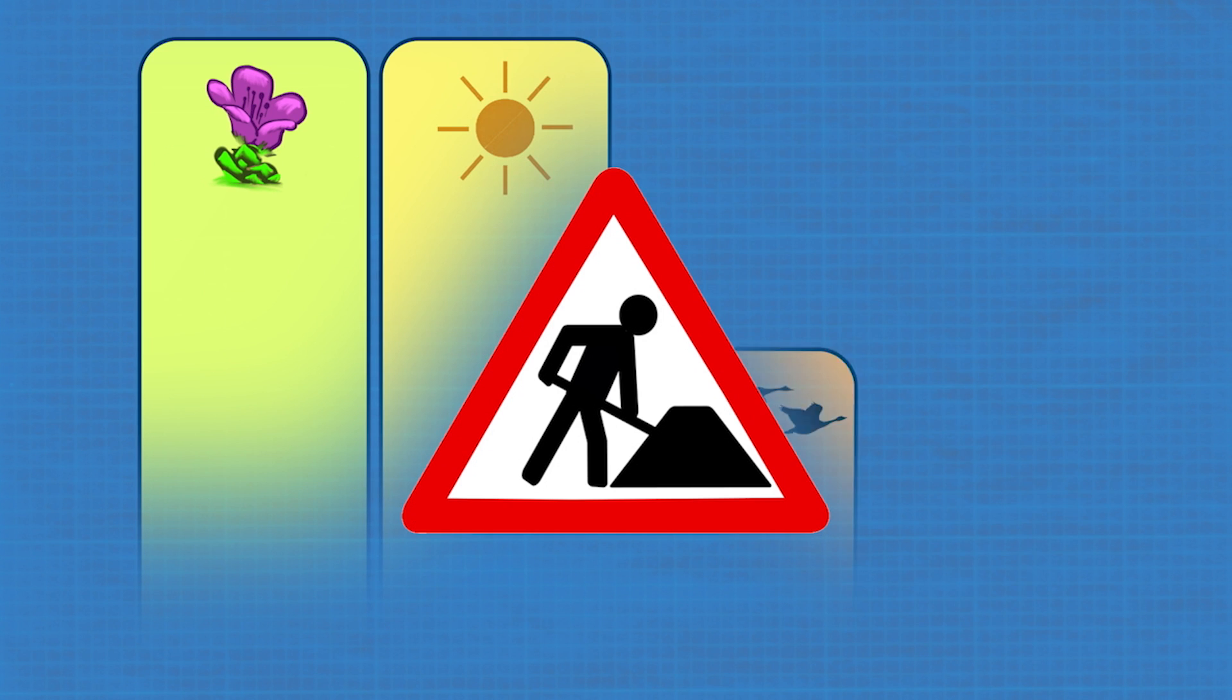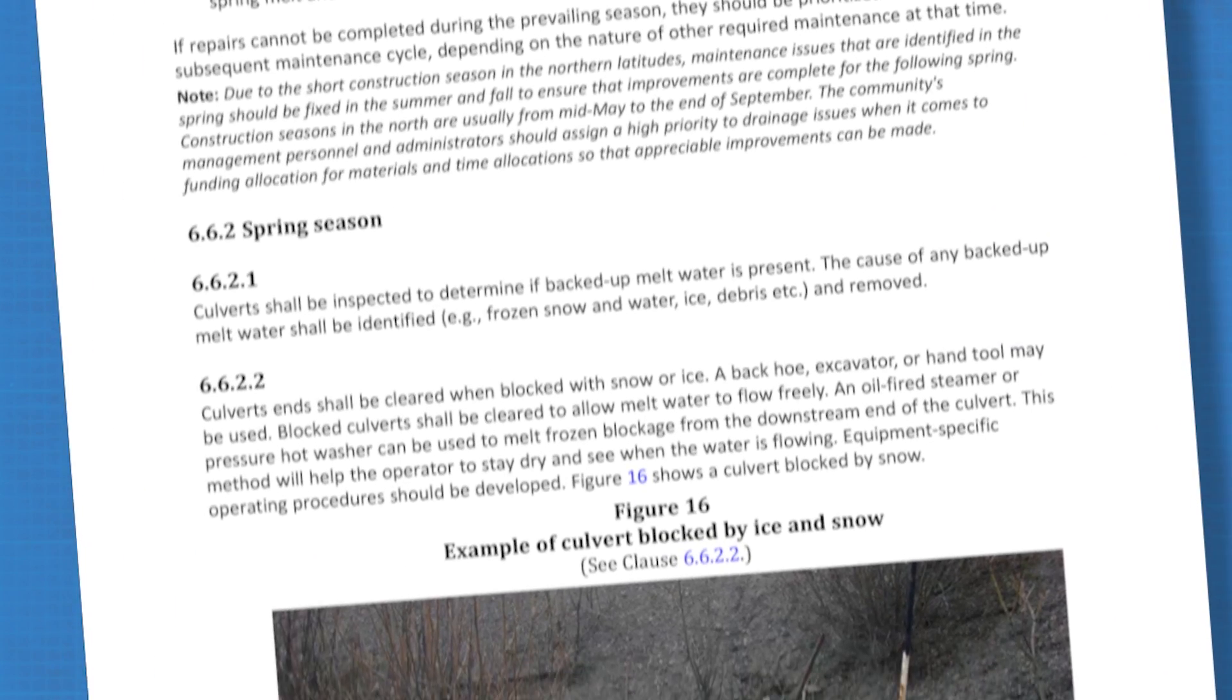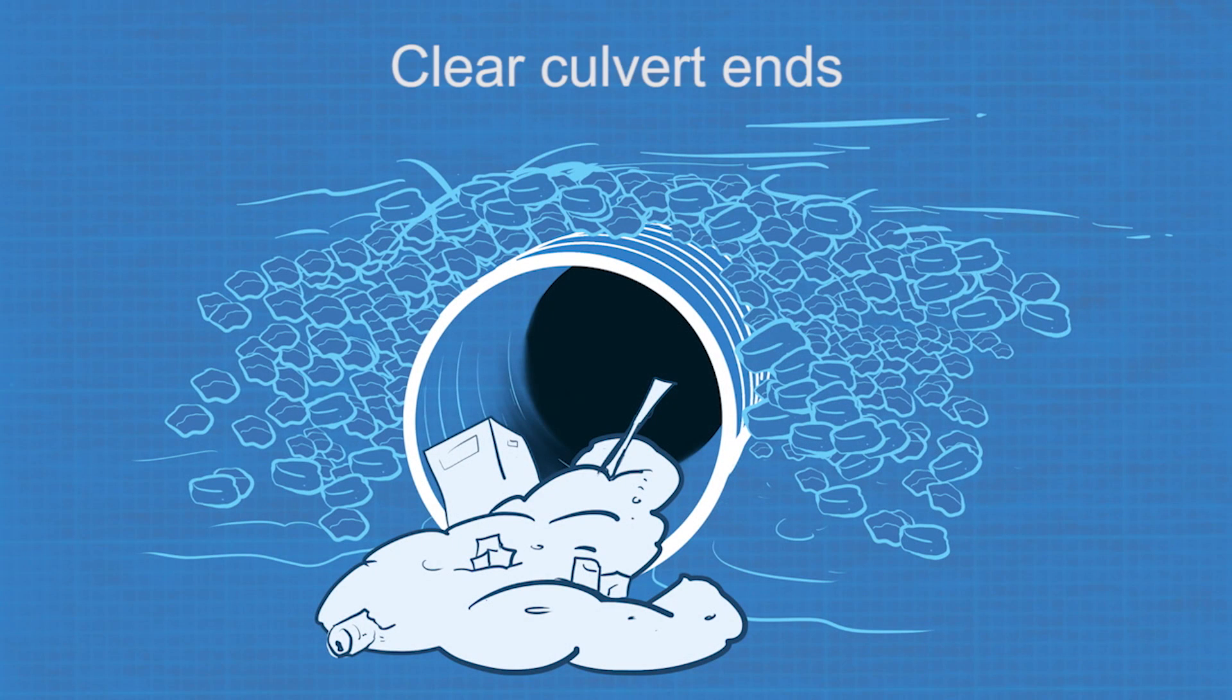Let's break the maintenance cycle down by season. In the spring, inspect all the culverts to see if backed up meltwater is present. Clear out debris from the ends of the culverts in spring too.